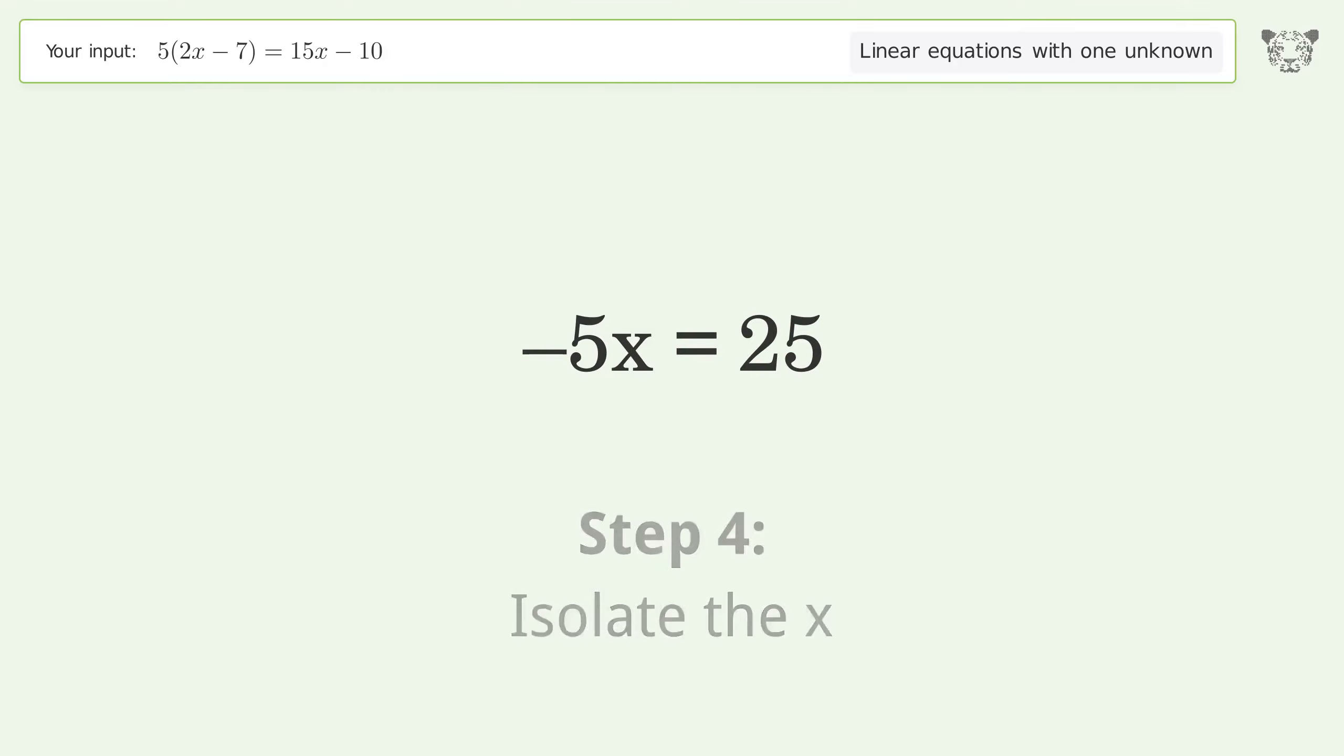Isolate the x. Divide both sides by negative 5. Cancel out the negatives. Simplify the fraction.